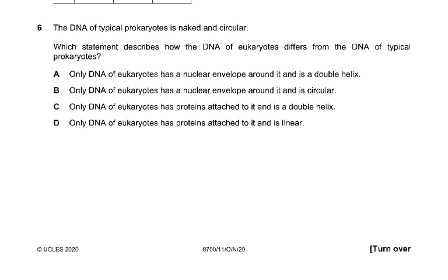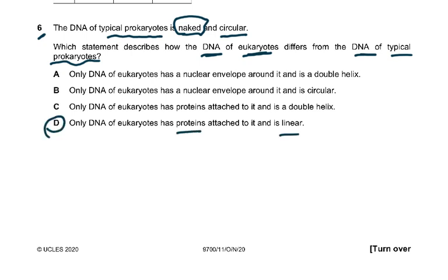Now another question answered wrong by many students. Question six: the DNA of a typical prokaryote is naked and circular. 'Naked' means it has no histone proteins — you should know that. Which statement describes how the DNA of eukaryotes differs from the DNA of typical prokaryotes? The answer is D — only the DNA of eukaryotes has histone proteins attached to it.